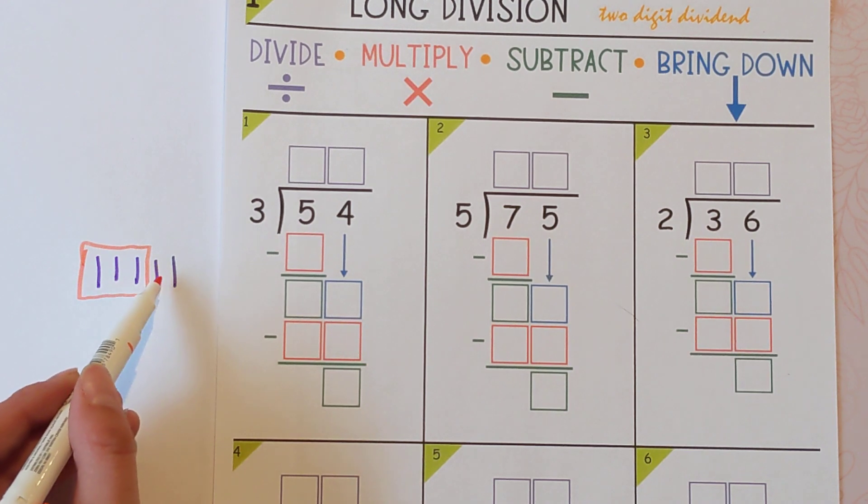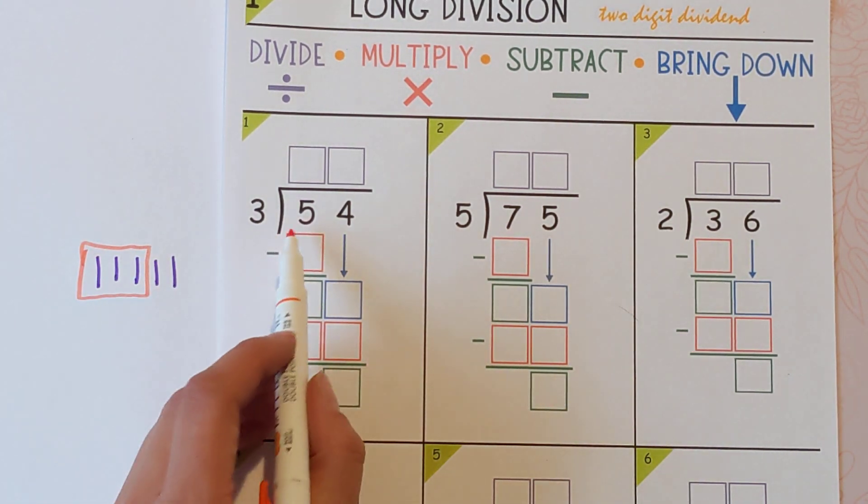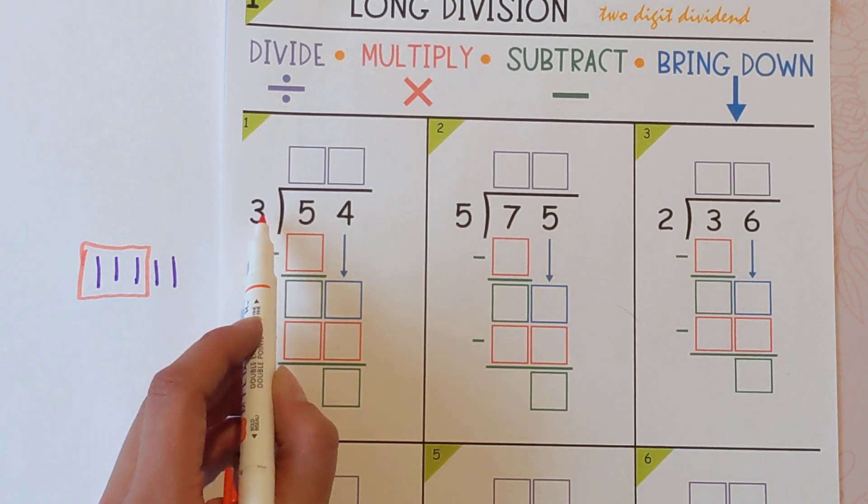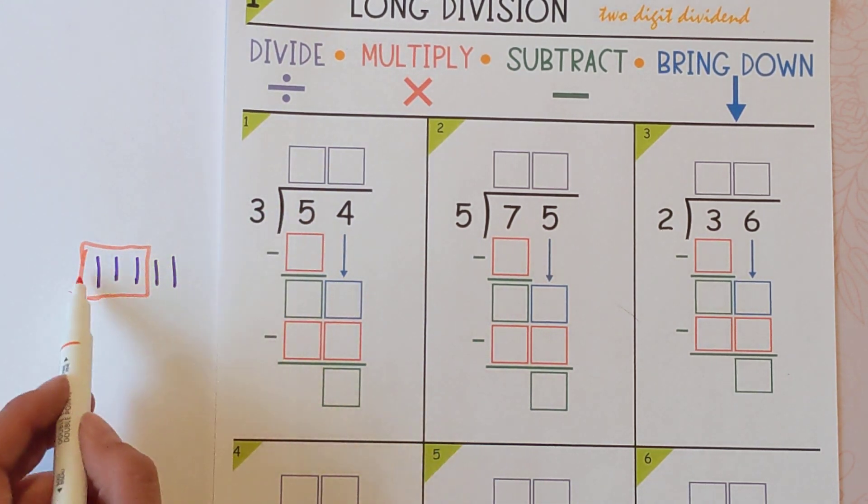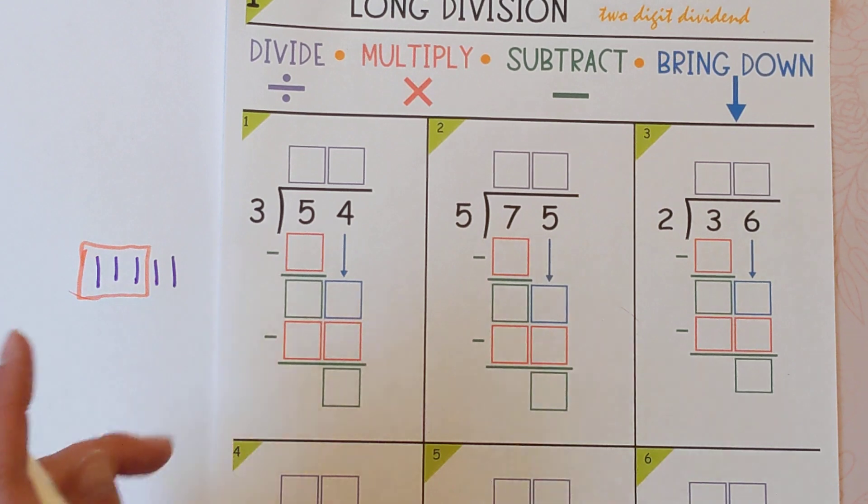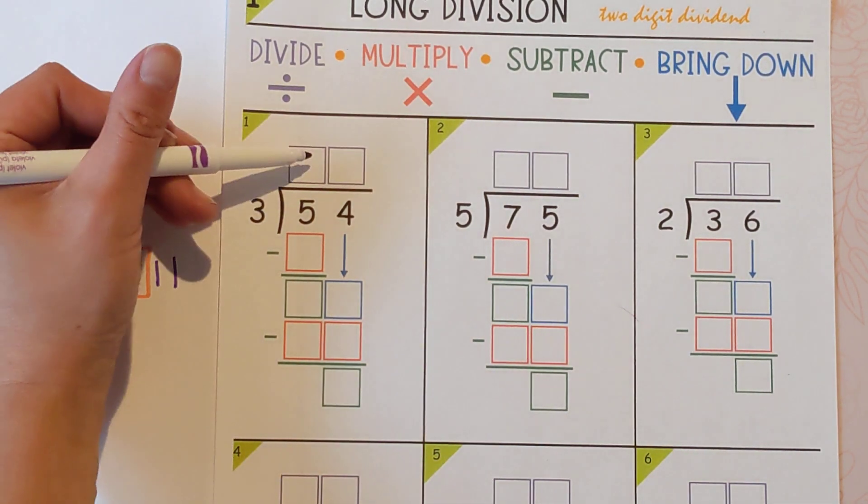Obviously there's more leftover. It doesn't divide perfectly, but really all we're asking is how many times can three go into five? How many groups of three can you make? And it's one.